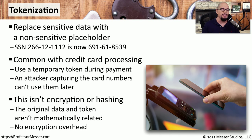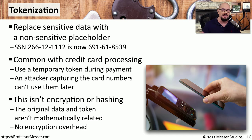It's important to understand that this isn't hashing and it's not encryption. There's no way to derive your original credit card number from the tokenized version because there is no mathematical relationship between either of those. And because there's no encryption, we don't have to worry about processing, CPU, memory, or any other type of overhead.